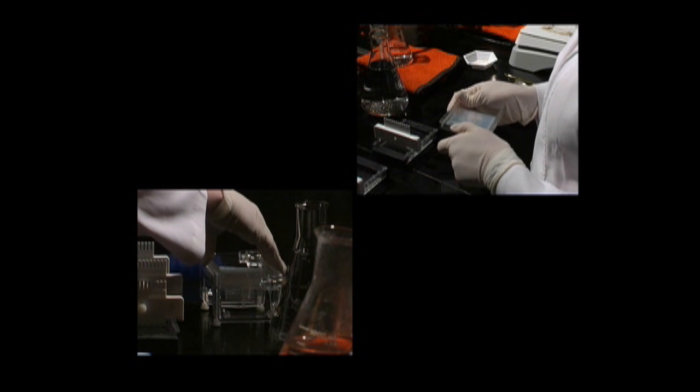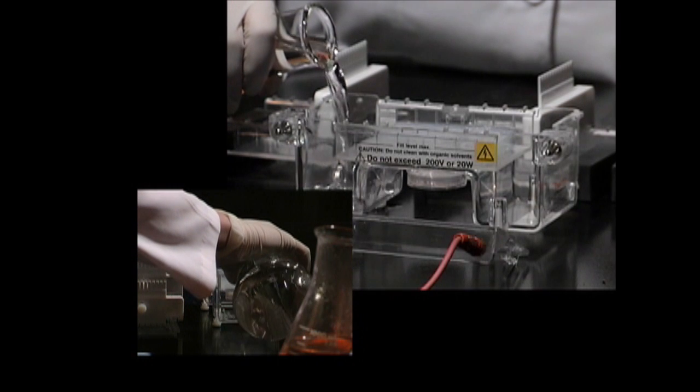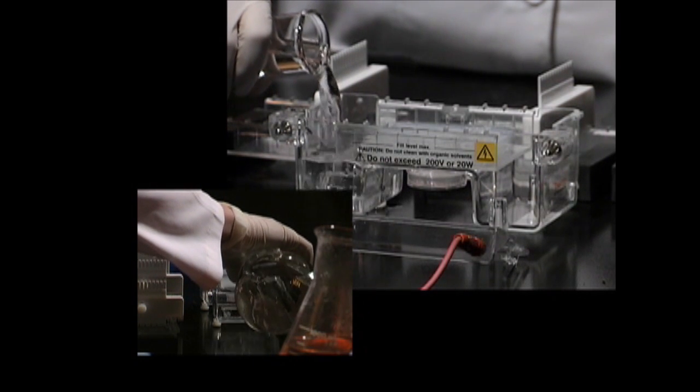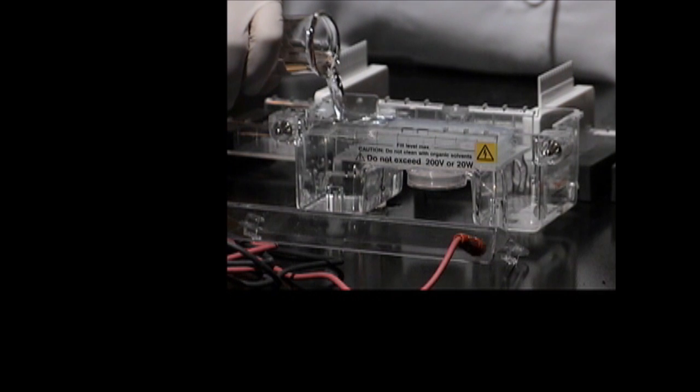Place the gel bed into the electrophoresis chamber, centered and level on the platform. Fill the chamber with diluted buffer. This type of gel is often called a submarine gel, because it's submerged under a buffer.